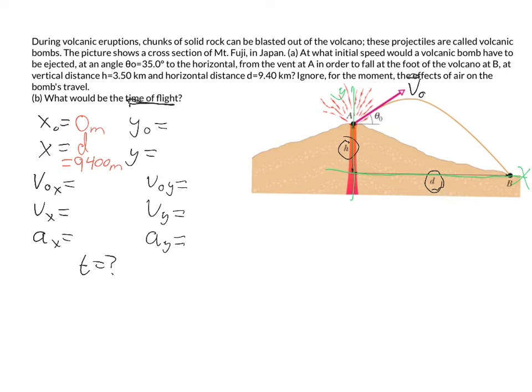So our initial x position, based on the way we drew these axes, would be zero. Our final x position is the distance D away that it landed, right? So that's D, or if we want to label that more specifically, that's 9,400 meters. It's 9.4 kilometers, so I just did a quick mental unit conversion there. Now, our initial velocity, we don't know. So some of you might be inclined to put a question mark here for the initial velocity. But that can actually be problematic because you'll end up with too many unknowns to solve.